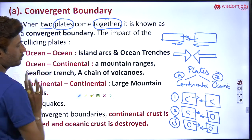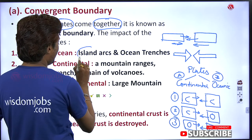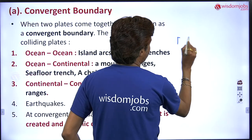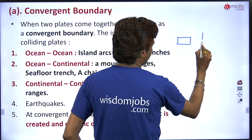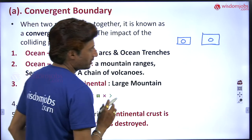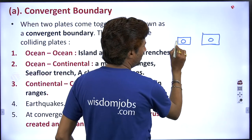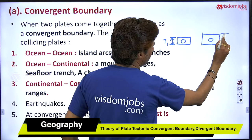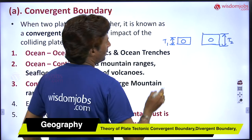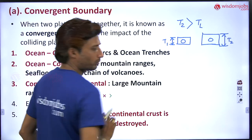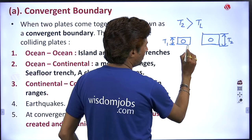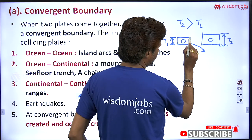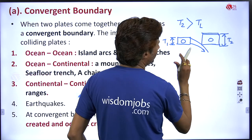Number one: ocean and ocean. When two oceanic plates collide with each other, island arcs and ocean trenches form. Let's consider this as one ocean plate and this as another ocean plate. I have drawn two different oceanic plates with different thickness — T1 and T2 — and T2 is greater than T1. So this thinner oceanic plate may subduct below the thicker plate.